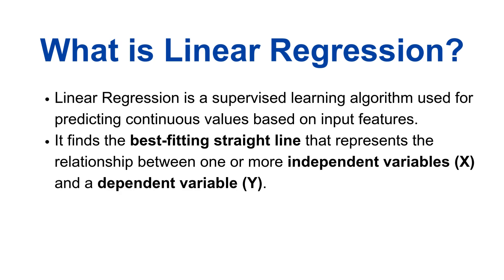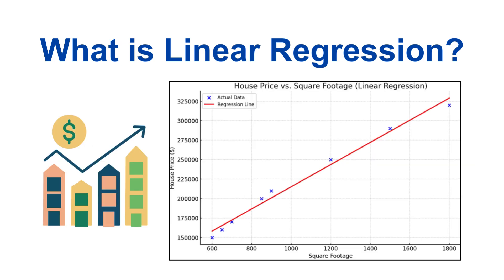Before we jump into coding, let us first understand what linear regression is and why it is so important in machine learning and data science. Linear regression is a supervised learning algorithm used for predicting continuous values based on input features. It finds the best fitting straight line that represents the relationship between one or more independent variables X and a dependent variable Y. Think of it like this: imagine you own a real estate business and you want to predict house prices based on their square footage. If you plot square footage on the X-axis and house prices on the Y-axis, a linear regression model will find the best straight line relationship between the two.